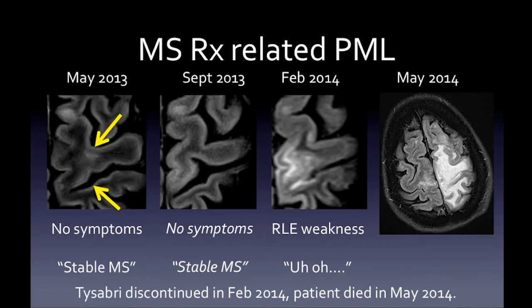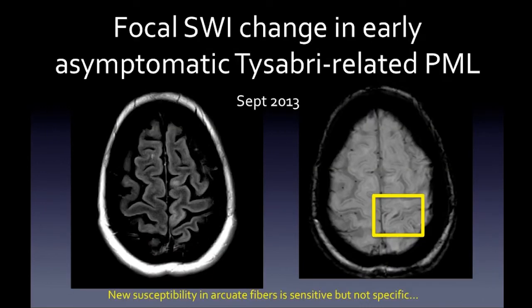Going back to 2013, you could see progressive changes in the subcortical and juxtacortical white matter. An important early sign: focal SWI (susceptibility-weighted imaging) changes can appear early in asymptomatic natalizumab-related PML. In MS patients on natalizumab or other immunotherapy, rapid development of new SWI signal changes in arcuate fibers should raise concern for developing PML. SWI signal changes can be seen in old MS plaques, but it's the rapid development of new SWI changes in a new lesion that is the red flag for PML.